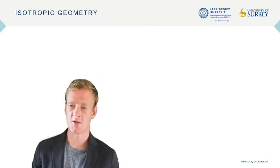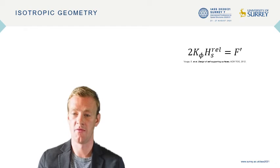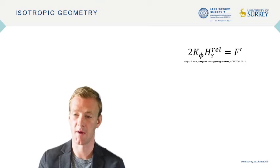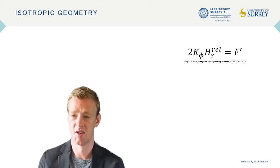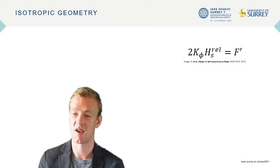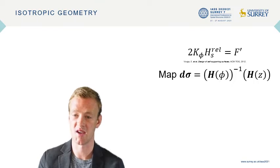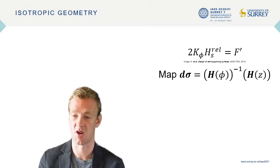We will now discuss the mathematical field of isotropic geometry, which is the natural language of the airy stress function. It has been shown by Vogler et al. that two times the isotropic Gaussian curvature of the airy stress function times the mean isotropic curvature of the shell relative to the airy stress function is equal to the projected loading on the shell. Using terms more familiar to a structural engineer, the isotropic curvature is given by the Hessian, which is related to the second derivatives of the surface. This paper builds on previous work by Vogler et al. using engineering nomenclature. The mapping function d-sigma from the shell surface to the airy stress function also has uses for the discretization of the continuum shell and airy stress function to yield discrete plane-faced funicular grid shells.